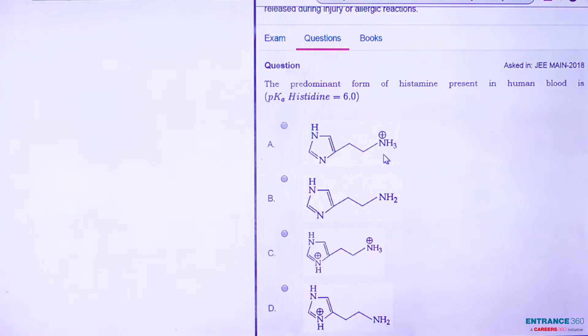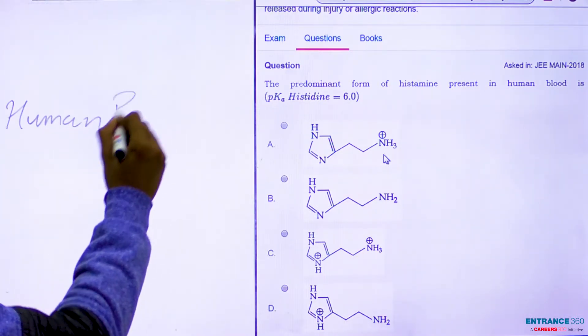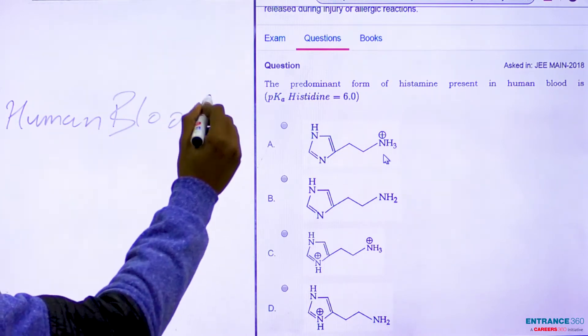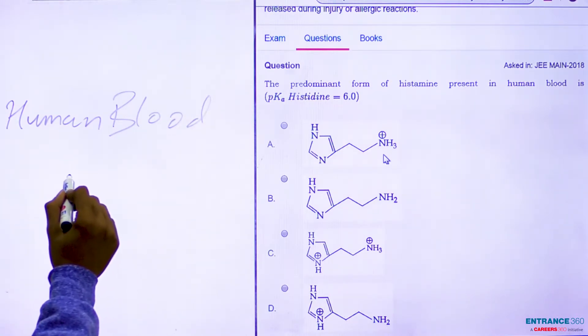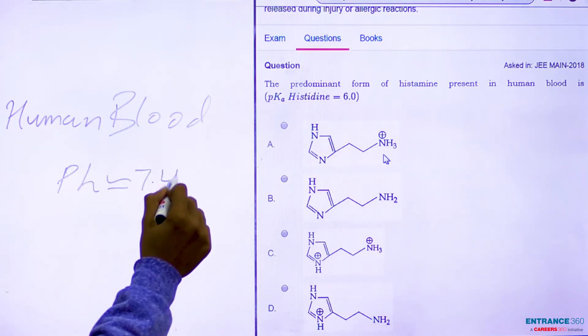So for this question, we need to have predetermined knowledge that human blood is slightly, just slightly basic in nature. The pH of human blood is nearly equal to 7.4.